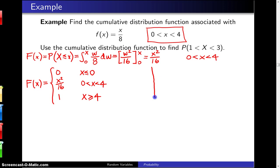Now to look at this problem geometrically, here is x and here is little f of x. The function f of x equals x divided by 8 defined from 0 to 4 is basically a ramp going up and then it cuts off at 4.